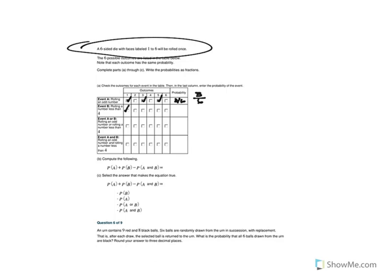Rolling a number less than four - one, two, three - gives us three out of six. Rolling an odd number OR rolling a number less than four gives us four out of six. Rolling an odd number AND rolling a number less than four gives us two out of six.